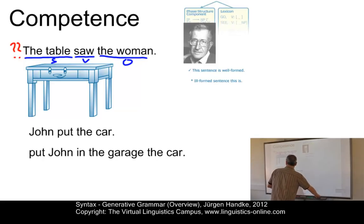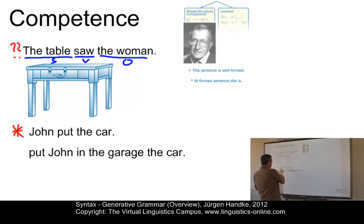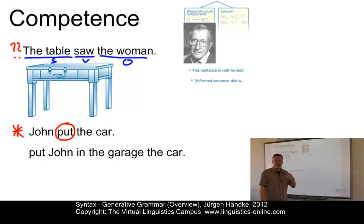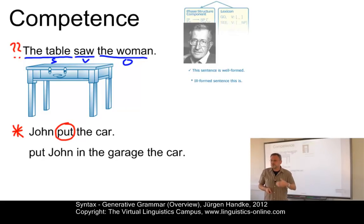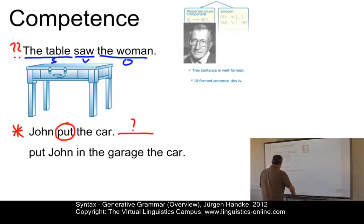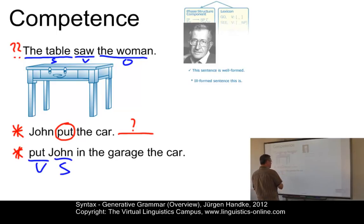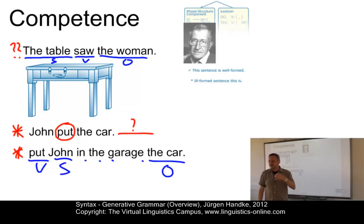The next sentence, 'John put the car,' is clearly ungrammatical. It violates the argument structure of the verb 'put.' We know that 'put' requires not only an object like 'the car,' but also a location or obligatory adverbial — that is, where do we put the car? Something is missing. Finally, a third sentence is also totally ungrammatical because its word order is not in line with English: a VSO pattern in declarative sentences is not the standard word order of present-day English.